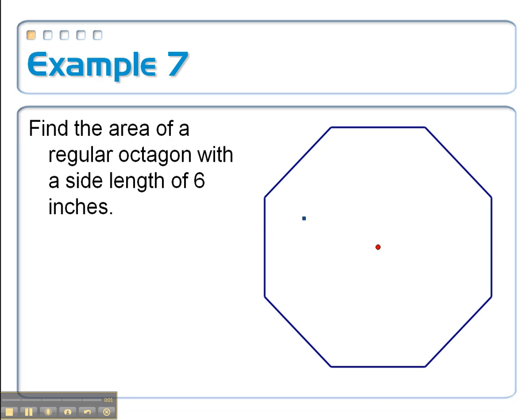Let's say we wanted to find the area of this regular octagon. It's got a side length of 6 inches. We know our formula to be one-half the apothem times the perimeter.